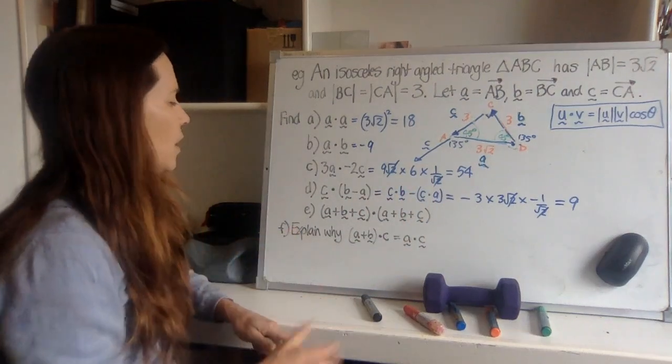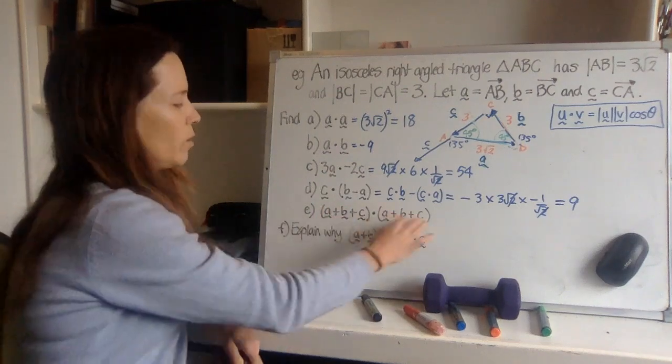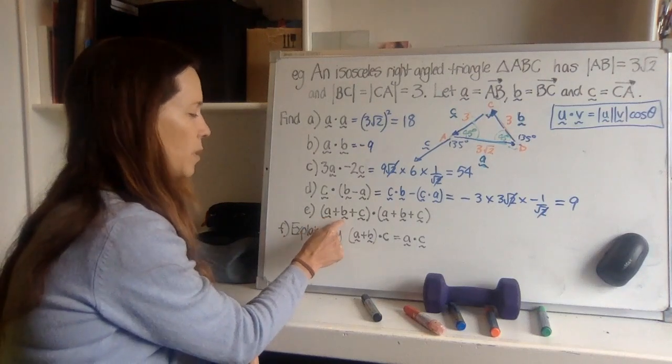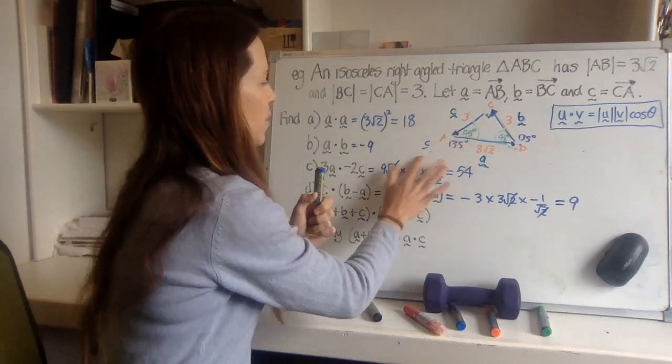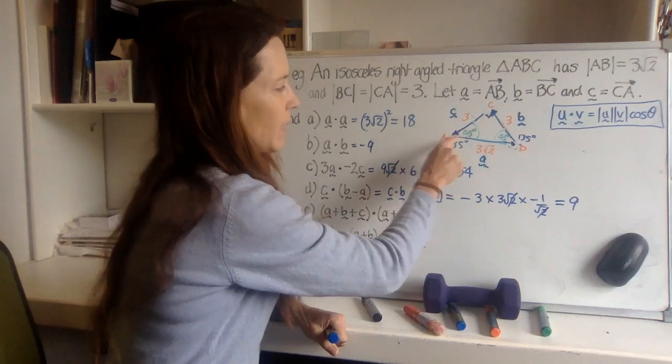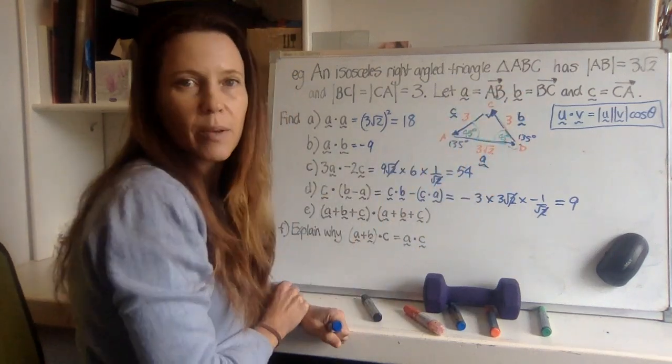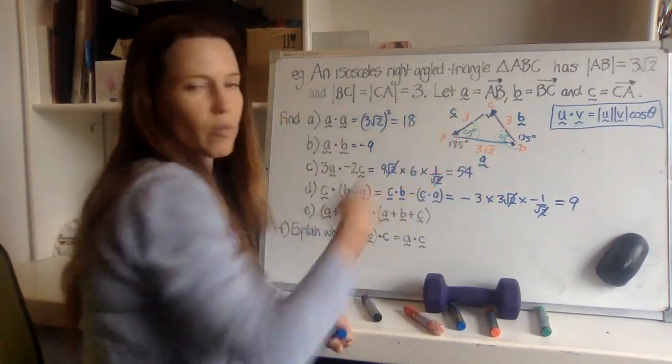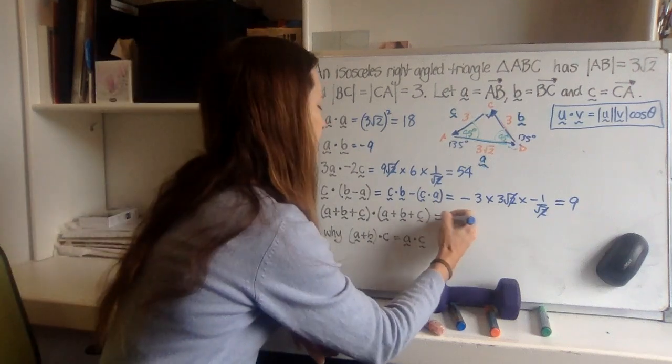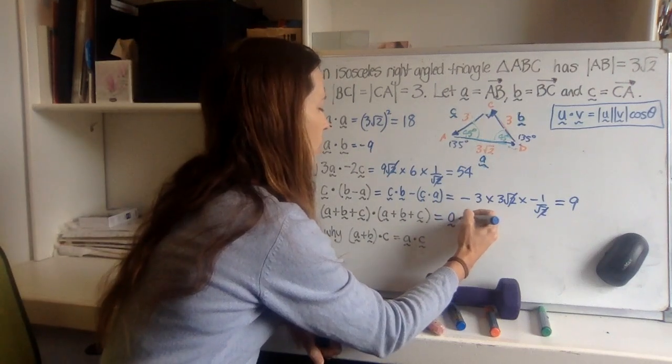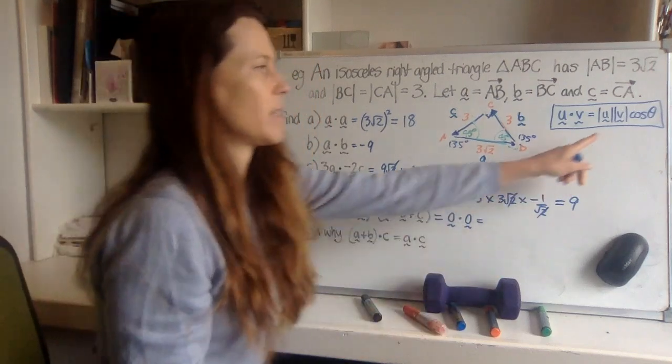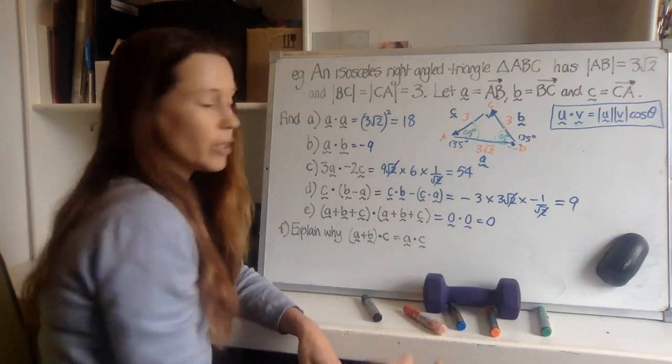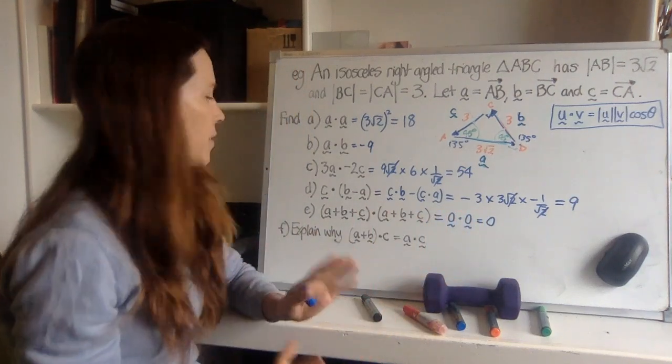Now for this next one, I could use the distributive law and end up in a world of hurt here. But as with anything, always look for shortcuts. Consider what vector a plus b plus c really is. Now, I've made a bit of a mess of my picture here, but I think you can still see that vector a goes this way, vector b goes that way, vector c goes that way. So if I follow all three of those vectors as instructions, I end up right back where I started. And that's a zero vector. So I've got a zero vector dot zero vector. And if either of the vectors is a zero vector, or if the lines are perpendicular, I get zero. Notice how my answer is not a zero vector, it's just zero, it's a scalar quantity.